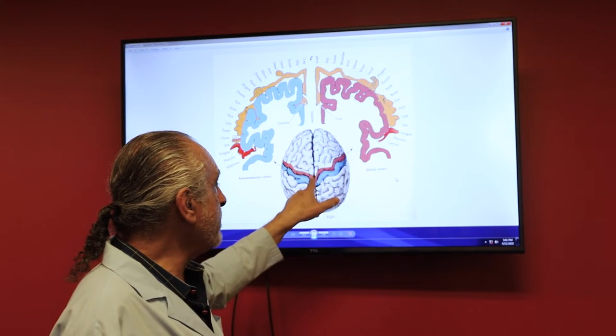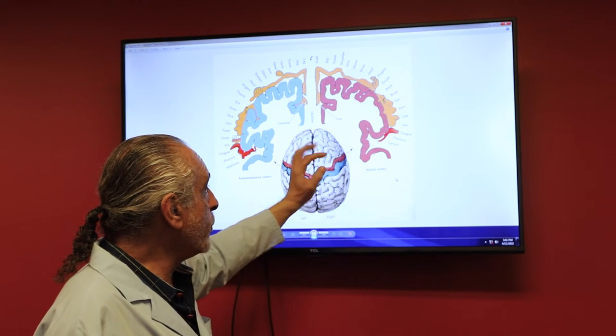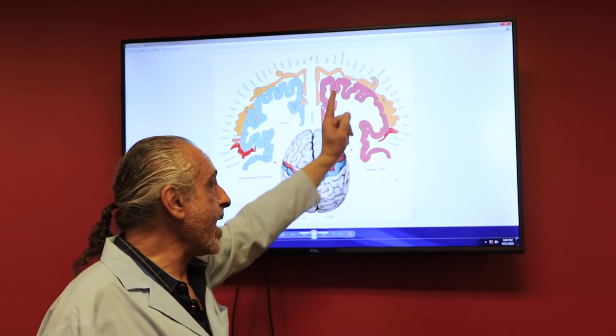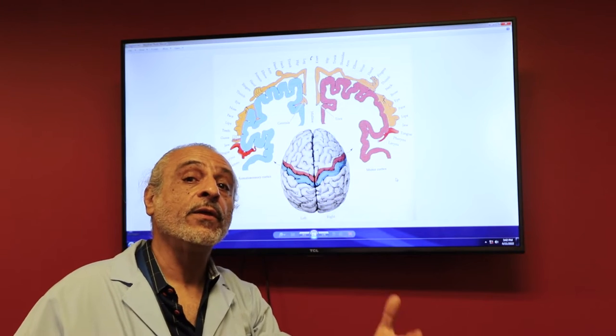In any regard, because the motor representation lays in the frontal lobe, neurons here send signals to the face or to the hand or to the larynx or to the leg, enabling them to move.